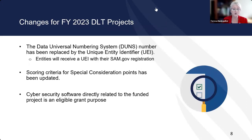Things that have changed for this year: the DUNS number has been replaced with the Unique Entity Identifier (UEI). If you are already registered in SAM, they will have given you a UEI. The scoring for special consideration points has changed. And cybersecurity software, if directly related to the funded project, is now a grant-eligible purpose.